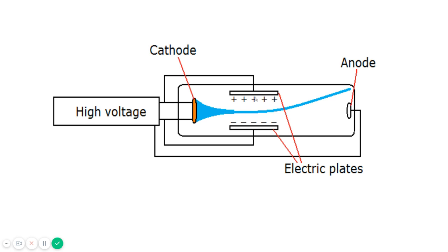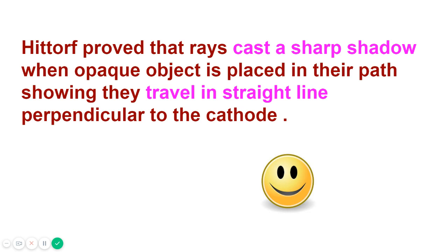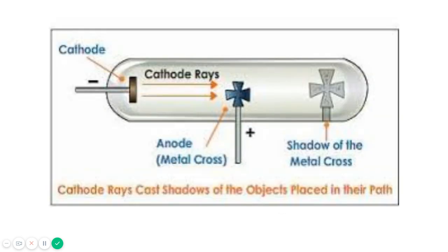Another scientist proved that rays cast a sharp shadow when an opaque object is placed in the path, showing they travel in a straight line perpendicular to the cathode. Like you can see in the diagram, this is the cathode, this is the anode, and this is a metal cross. You can see it casted a shadow showing the rays travel in a straight path.